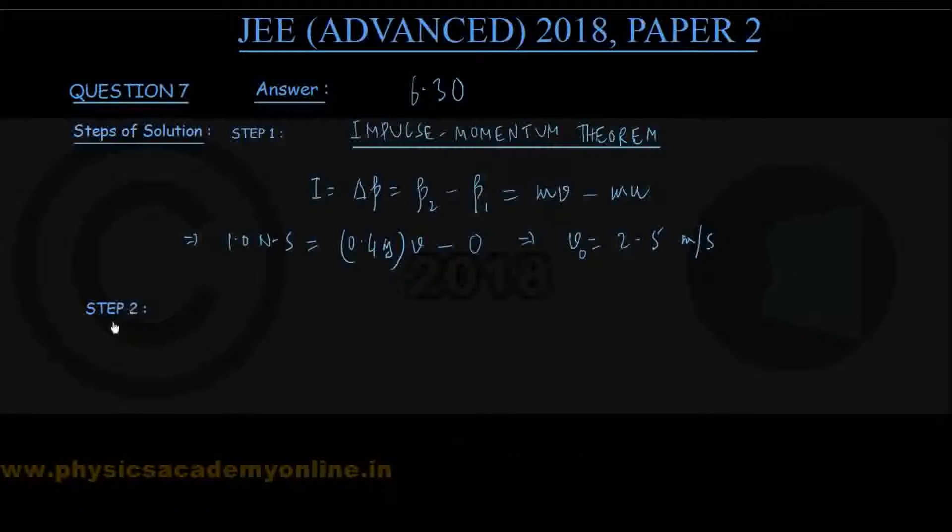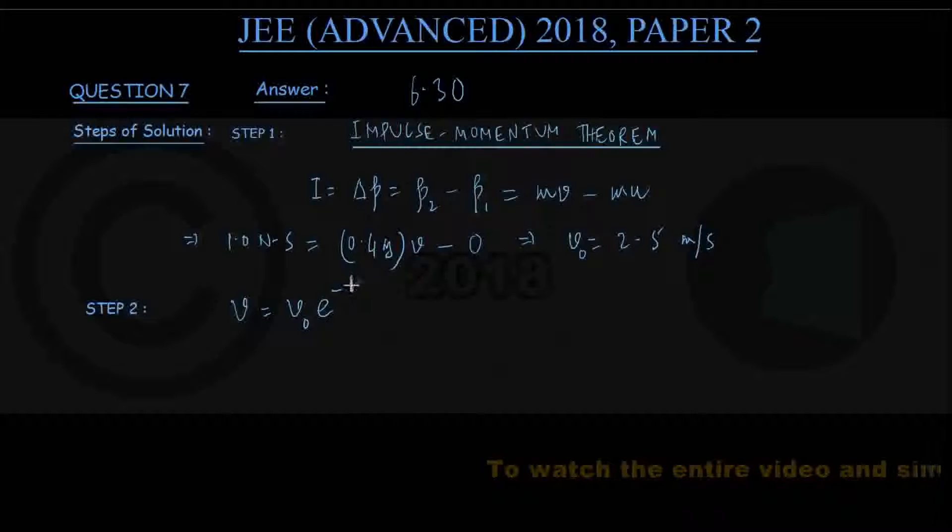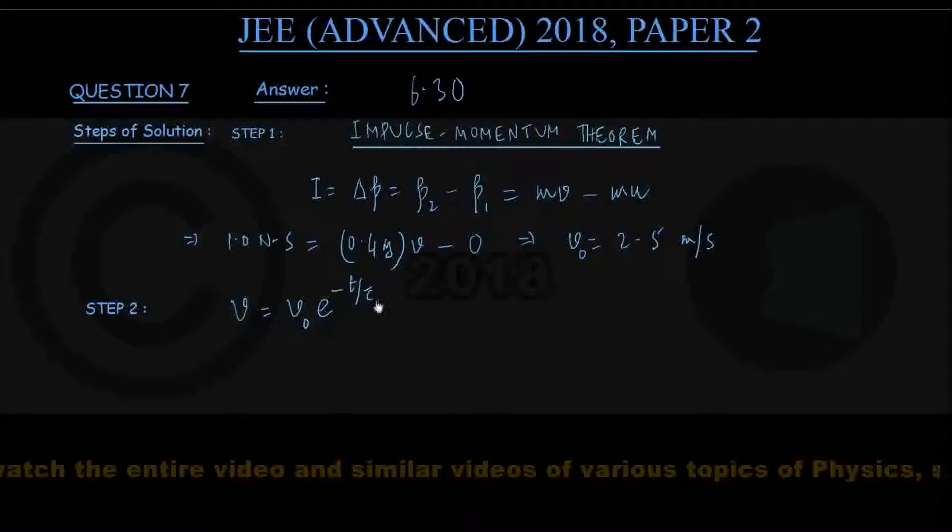In step 2, we note that instantaneous velocity v of the block is a function of time given by v0 times e to the power minus t by tau, where v0 is the speed at time t equals 0. Tau is a constant appearing in the power of exponential function.